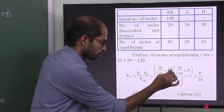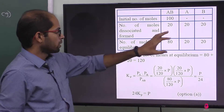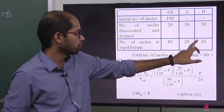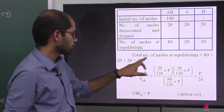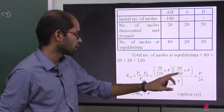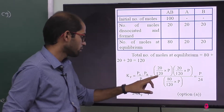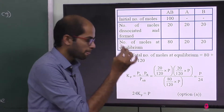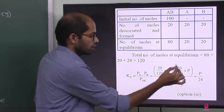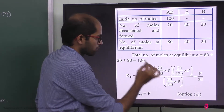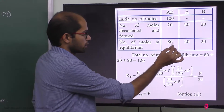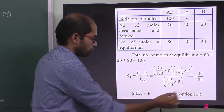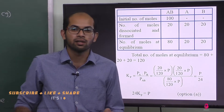Using mole fraction times total pressure: total number of moles equals 80 plus 20 plus 20, which is 120. Partial pressure of A equals 20 divided by 120 times P. Partial pressure of B equals 20 divided by 120 times P. Partial pressure of AB equals 80 divided by 120 times P. Total pressure P divided by 24. Cross-multiplying gives 24 Kp equals P.